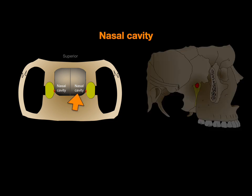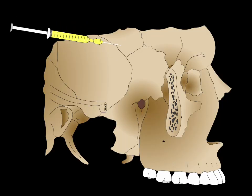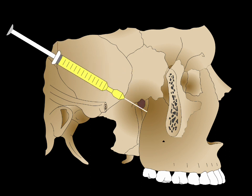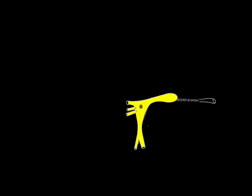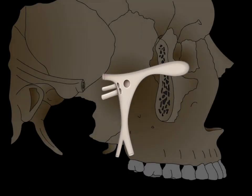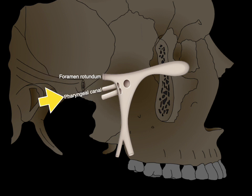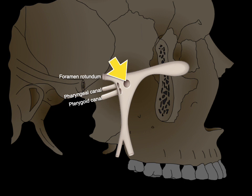If you go through the sphenopalatine foramen, you enter the nasal cavity. Now let's take this pterygopalatine fossa and do something with it. Let's take a syringe filled with liquid plastic, stick it through the pterygomaxillary fissure, and inject this liquid plastic to fill the pterygopalatine fossa until it hardens. Then crack the skull open and we're left with a plastic cast of the pterygopalatine fossa, including its openings. There is the foramen rotundum for V2, which communicates with the middle cranial fossa. There's the pharyngeal canal communicating with the pharynx. Next is the pterygoid canal, also known as the vidian canal. And on the medial wall is the sphenopalatine foramen, which communicates with the nasal cavity.